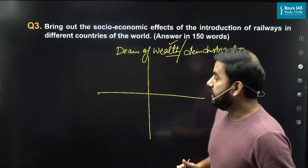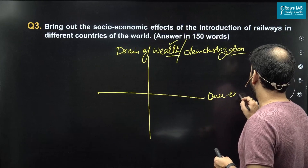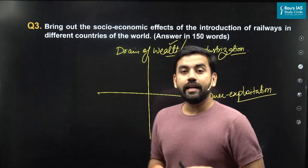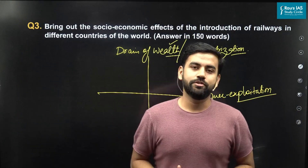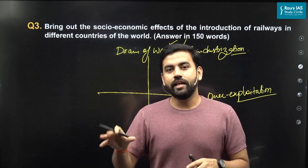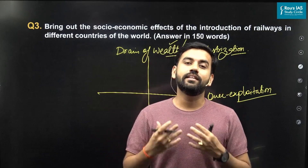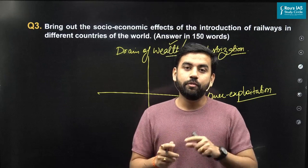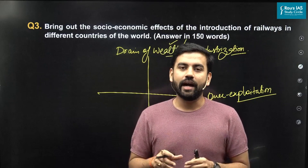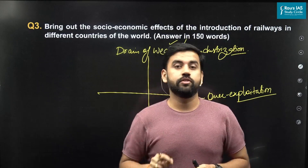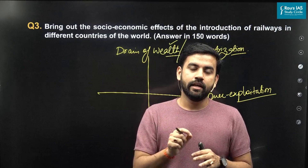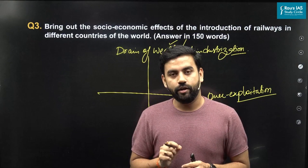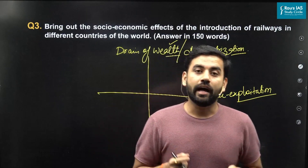The second important negative effect is that it led to the over-exploitation of natural resources. Since transportation became easy, colonizers started exploiting more and more resources, especially in tribal regions. They tried to intervene in tribal regions to make things easier for themselves, and because of that there was regular conflict between the colonizers and the tribals. Not only that, the over-exploitation of resources — especially forest resources — was driven by the use of wood for building railway bogies and furniture inside the railways, leading to excessive exploitation of natural resources.